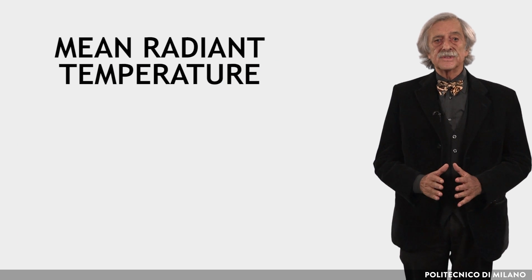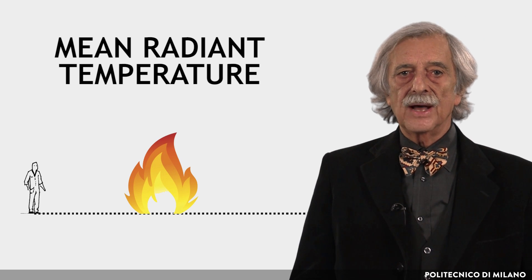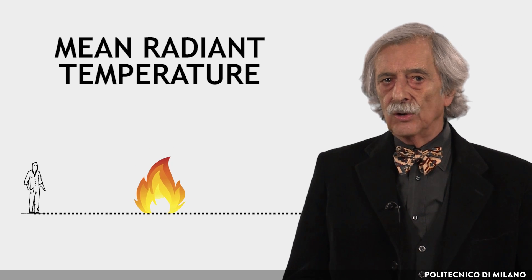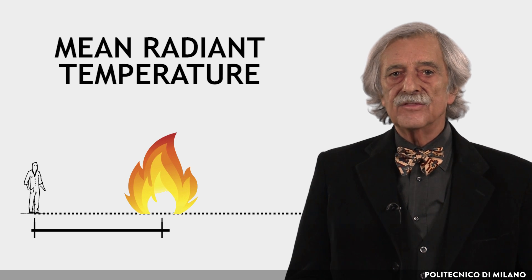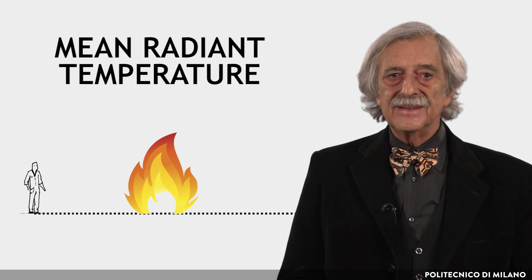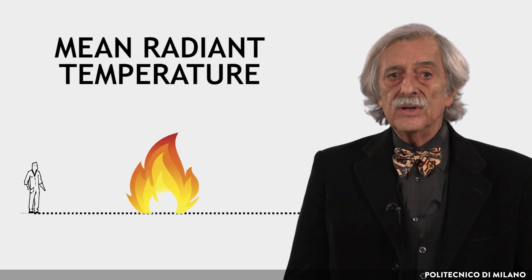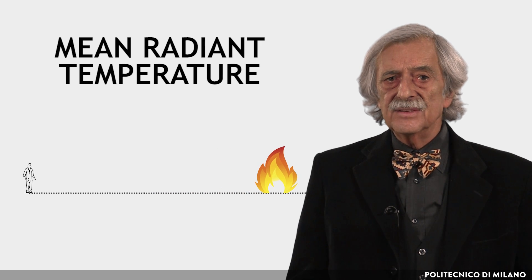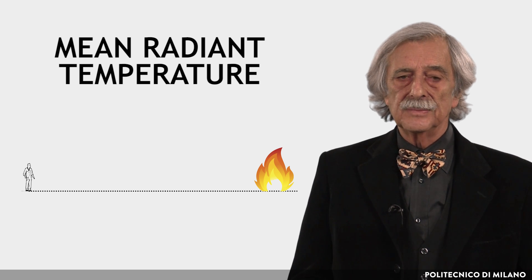The mean radiant temperature deserves some more explanation. Consider a fire: the thermal effect of a fire on our body does not depend only on how big the fire is, but also on the distance we are from it. The closer the fire, the higher the heat flow reaching us, and the bigger we see it. If we are far away, we see the fire as a small dot and its heating effect becomes negligible.